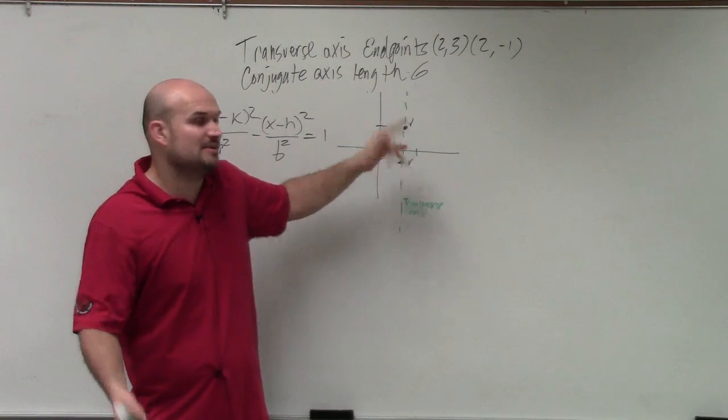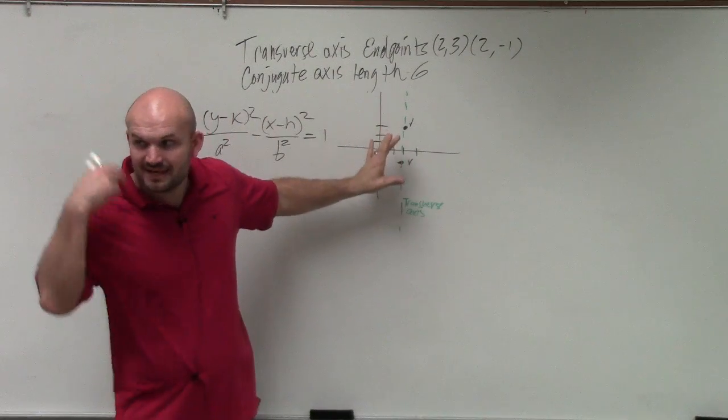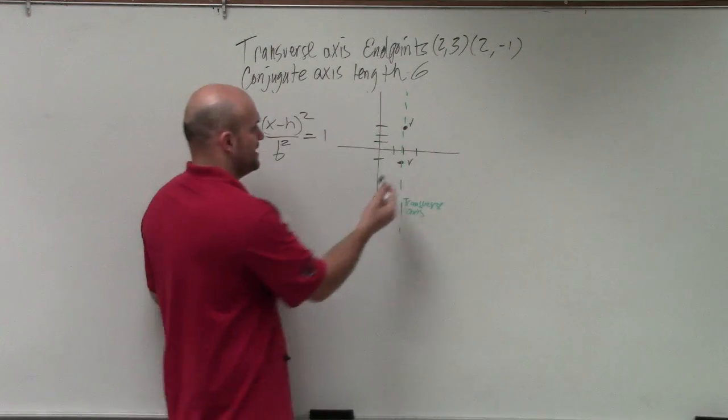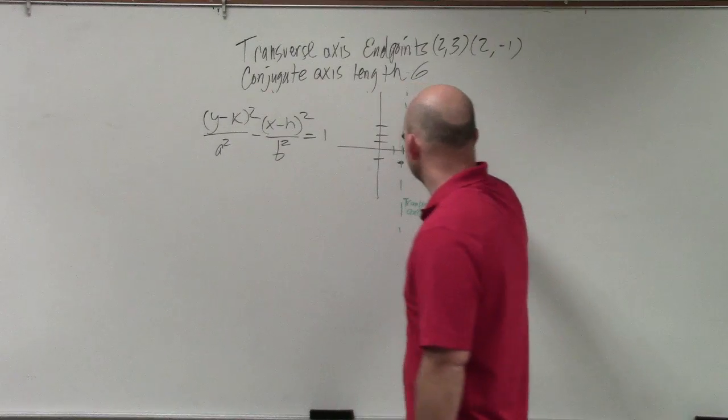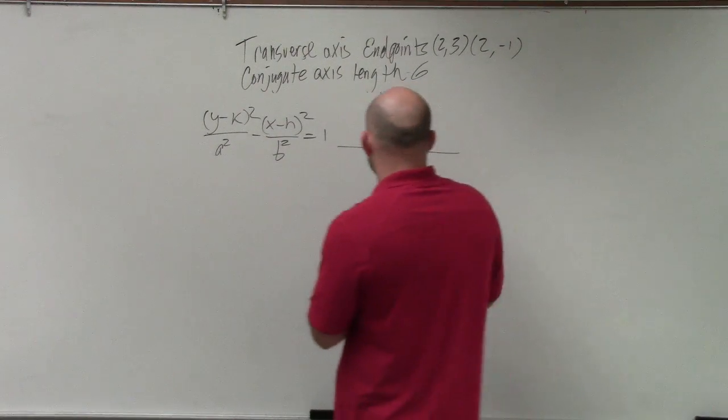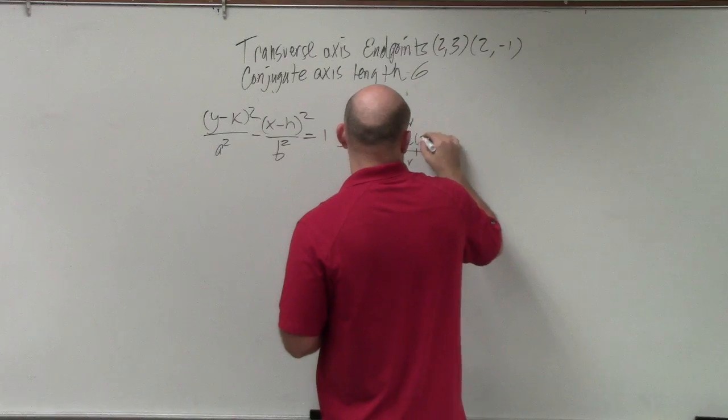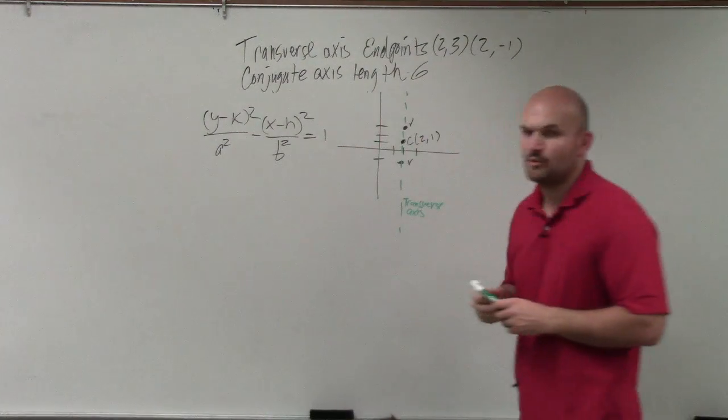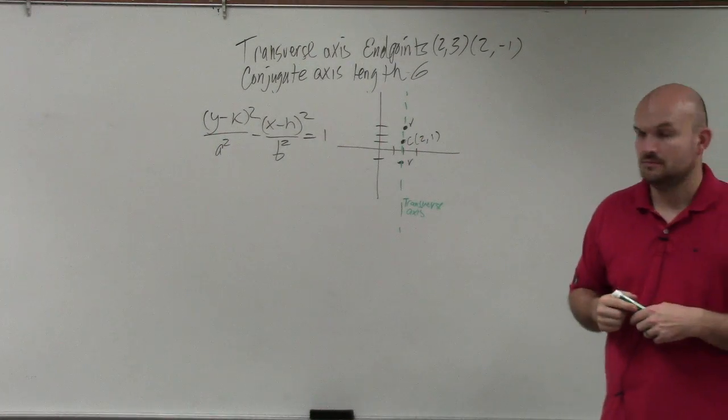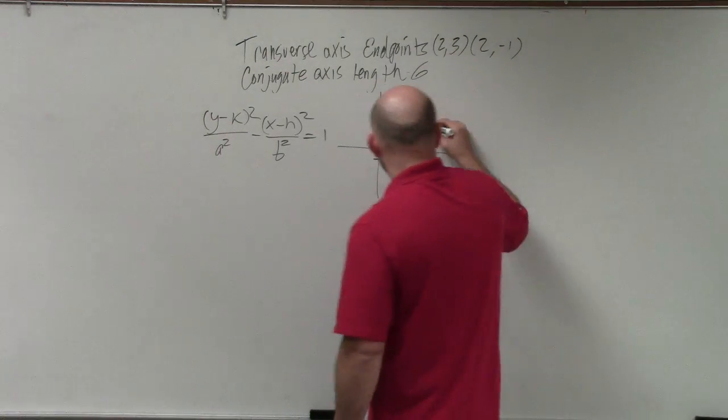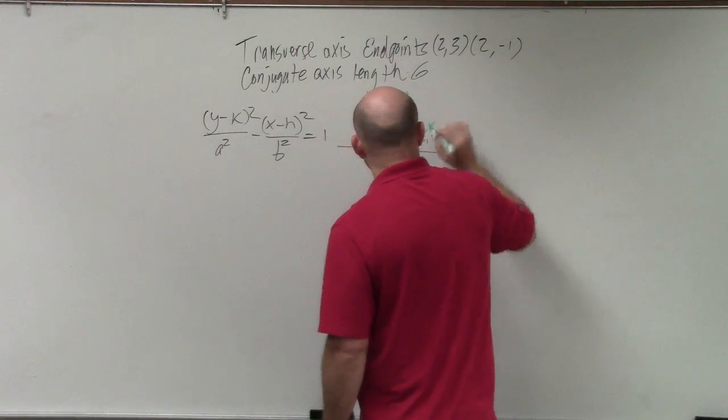So you could do mathematically, you could find the midpoint. Or since I graphed it, it's very easy for me to visualize and say, all right, the distance is 1, 2, 3, 4. Or I can just calculate that my center here is right there at 2, 1. So I'm going to label that h, and I'm going to label that k.